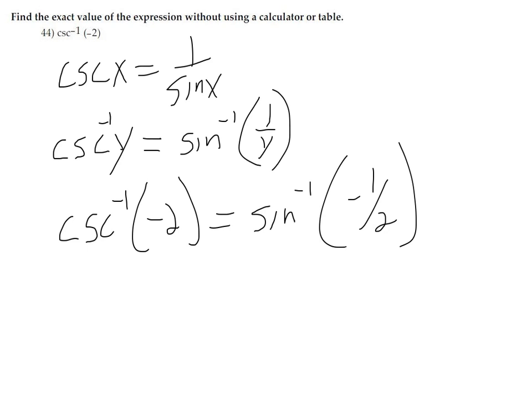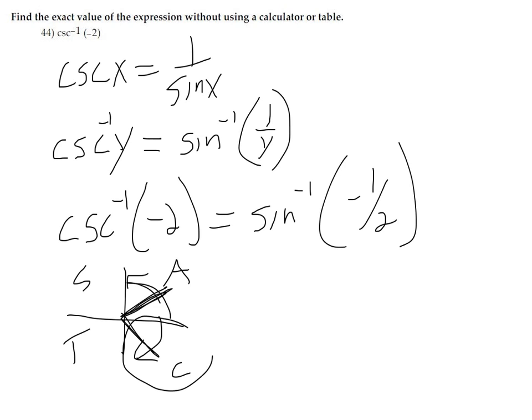So now we're asking: when is sine equal to negative 1 half? Arcsine lives in the first quadrant or the negative first quadrant — those are the only spots arcsine lives. Keeping track with 'all students take calculus,' the negative quadrant is where arcsine would be negative. Sine is 1 half at 30 degrees or pi sixths, so the answer is negative pi sixths.